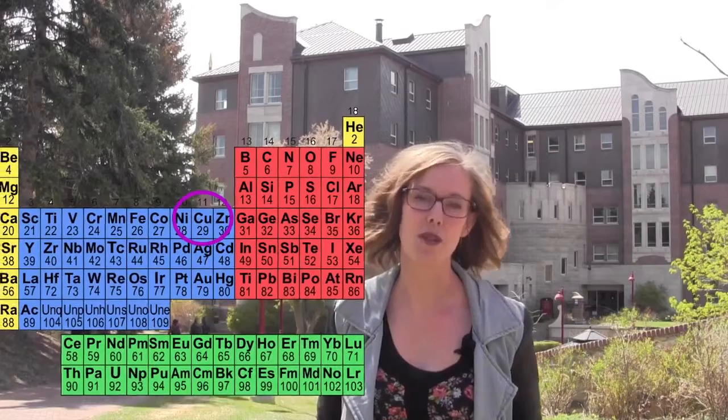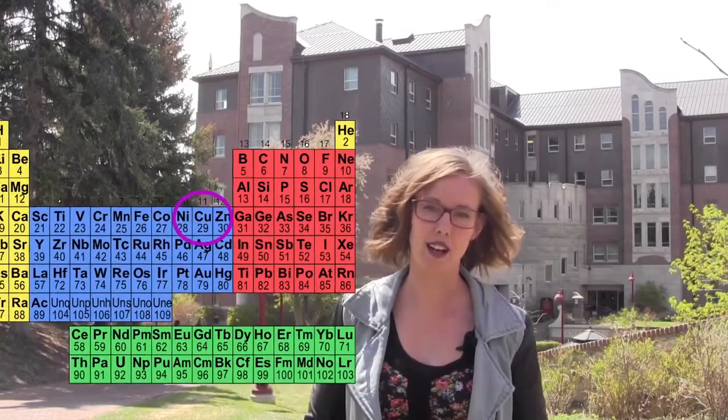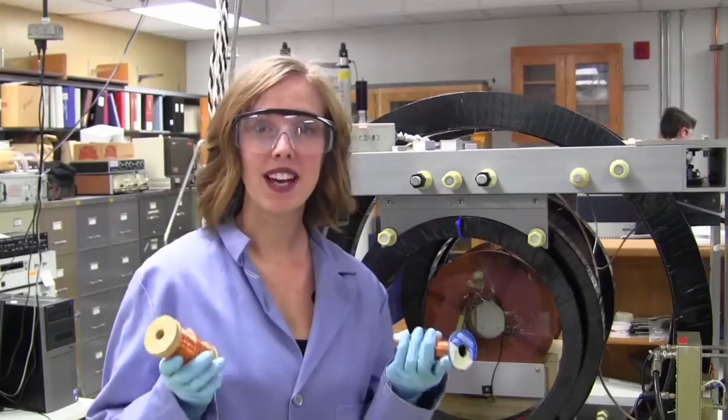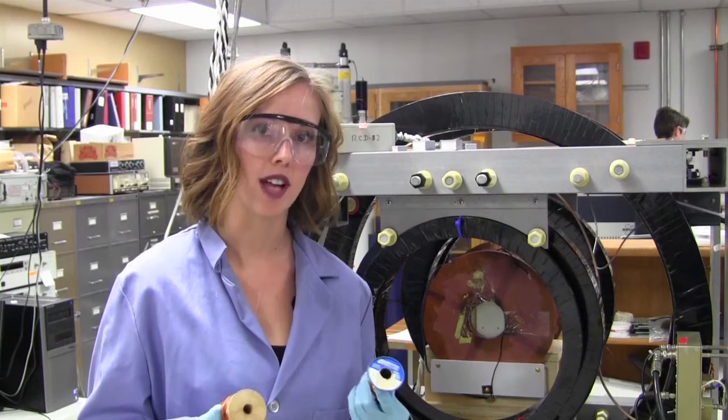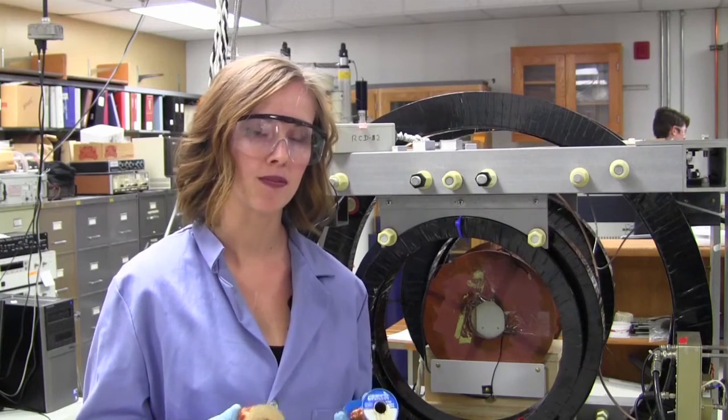Copper is element 29 on the periodic table. Copper is the second most conductive metal, meaning that electricity and heat can pass through copper very easily. Because of copper's very high electrical conductivity, we can use it for a variety of electrical applications.